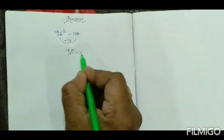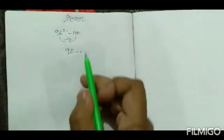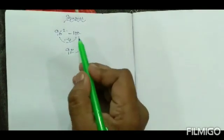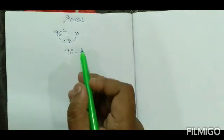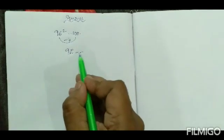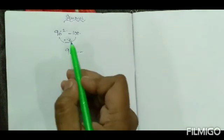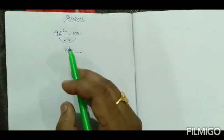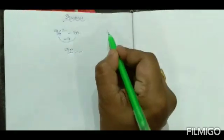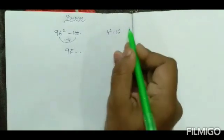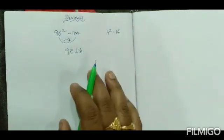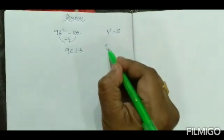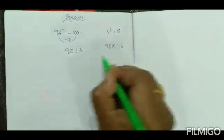Now we write 2 places here. Why 2 places? Because we are taking 100 as our benchmark, and 100 has 2 zeros. Take 2 places, and since the difference is 4, we take the square of 4. 4 squared is 16, so we write 16 here. Therefore, 96 squared equals 9216. We can also cross-check by computing 96 × 96.